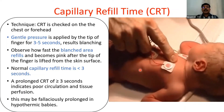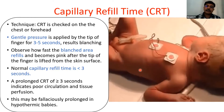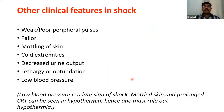Capillary refill time should be checked over the chest, preferably over the sternum, or the forehead. Apply pressure for three to five seconds causing blanching, then release — the time taken for color to return is the capillary refill time. Normally it is less than three seconds. More than three seconds indicates poor circulation and poor tissue perfusion. Note that in hypothermic babies, CRT is unreliable.